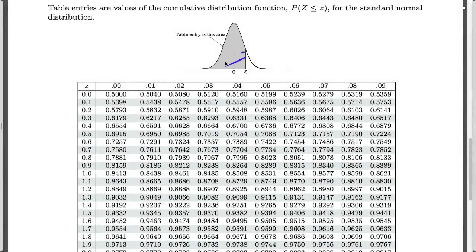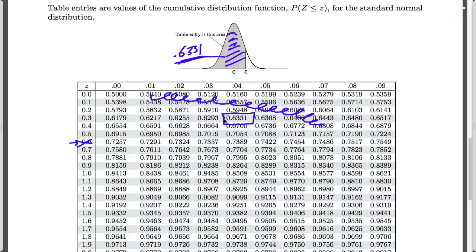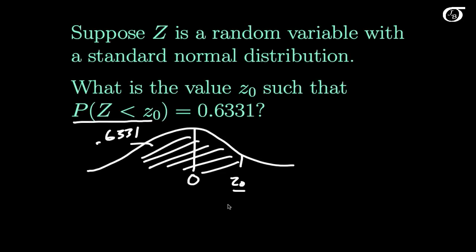Here's our standard normal table — it gives us the area to the left for the Z value we look up. We need that area to be 0.6331. Do not go running down the Z column; areas are given in the body of the table. So we are trying to find 0.6331 in the body of the table. And here we go — 0.6331 corresponds to a Z value of 0.34. So the probability that Z is less than 0.34 is 0.6331.